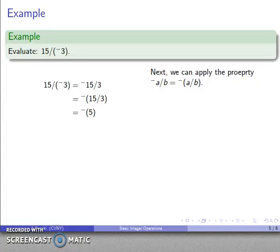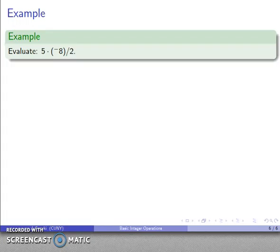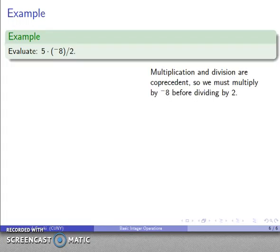Next example: 5·(-8)/2. Multiplication and division are co-precedent, which means I do them in the order that I see them. I multiply by -8 first, then divide by 2. I can begin by using the property...